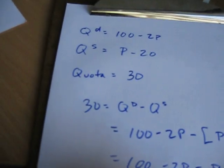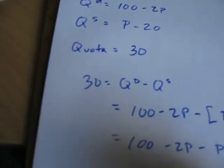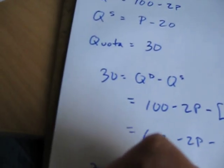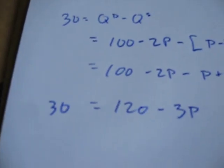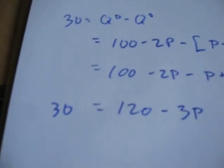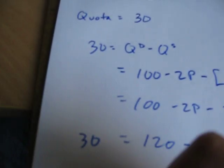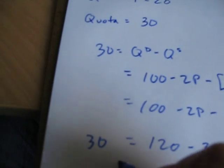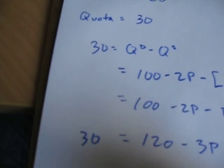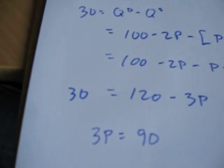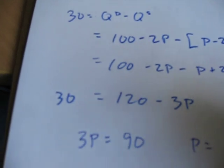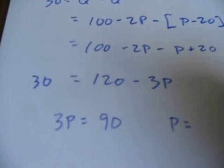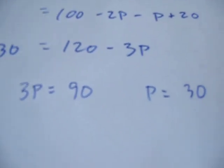So let's collect some terms. 120 minus 3p is still equal to that quota of 30. Take the 3p over to the other side, take that 30 over to the other side. 3p is equal to 90. So that tells us the price under the quota is going to be 90 divided by 3, or 30.